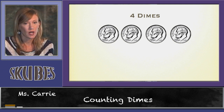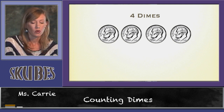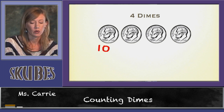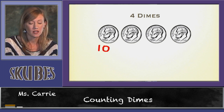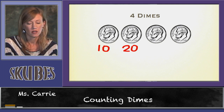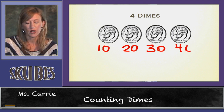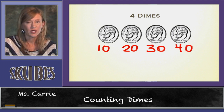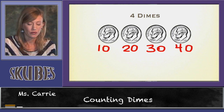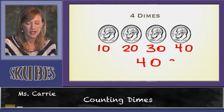Let's take a look at four dimes. We start with ten, and we're counting by tens, so the next would be twenty, three would be thirty, and four would be forty. Four dimes is equal to forty cents.